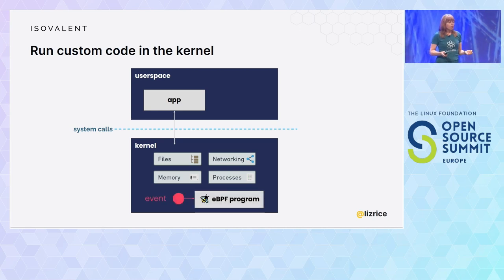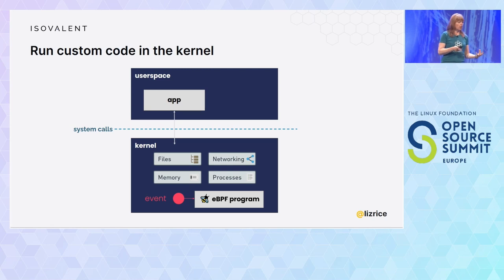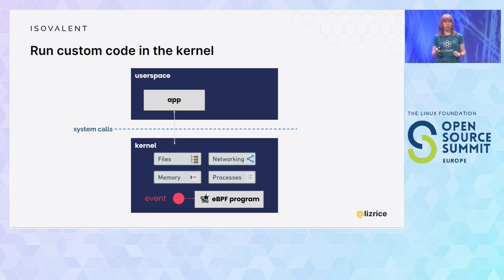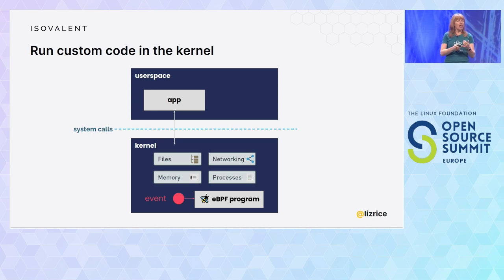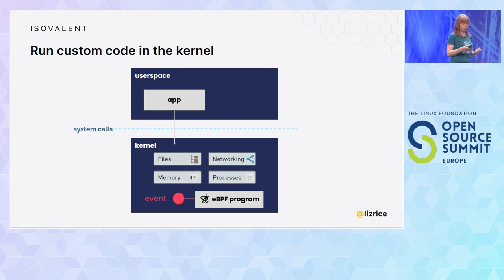When we use eBPF, we can write programs, load them into the kernel, and attach them to events in the kernel. Whenever that event happens, the eBPF program runs. Those events could be any function call, any trace points, or network packets arriving at certain points in the networking stack — all of these things can be used to trigger our custom eBPF programs.